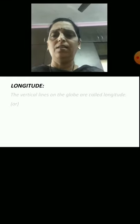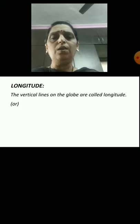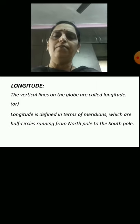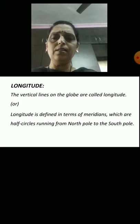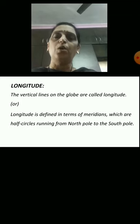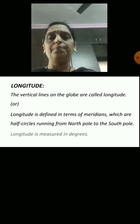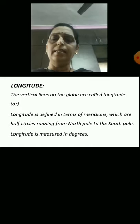What is longitude? The vertical lines on the globe are called longitude. Longitude is defined in terms of meridians, which are half circles running from the north pole to the south pole. Longitude is measured in degrees.